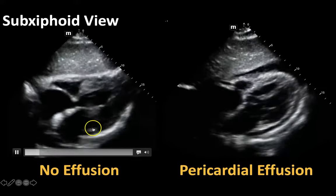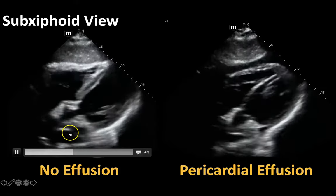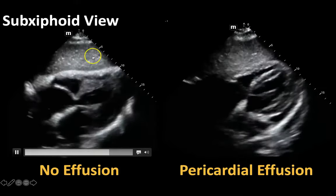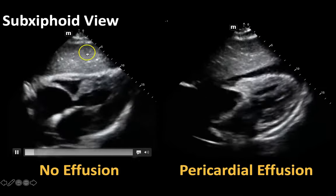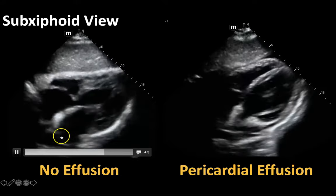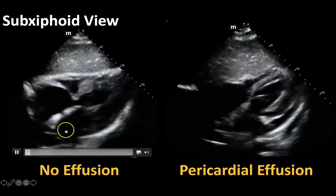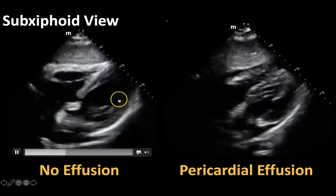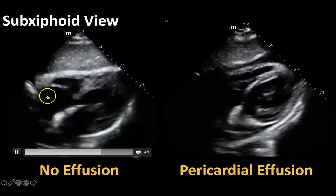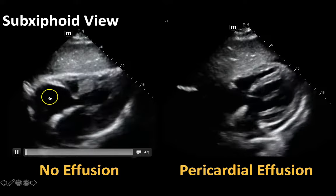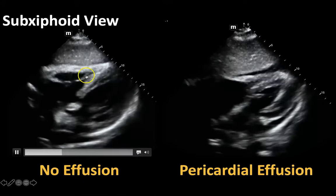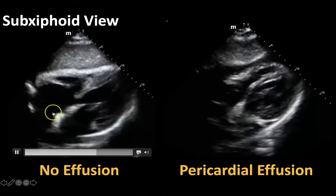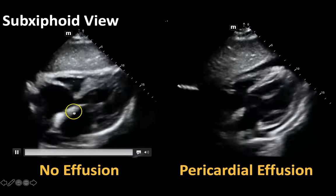To remind you of some anatomy — here's your liver up here most superficially, and then back here you have your left atrium, your left ventricle, your right atrium, and your right ventricle kind of coming in and out of plane.